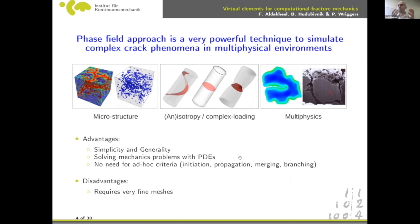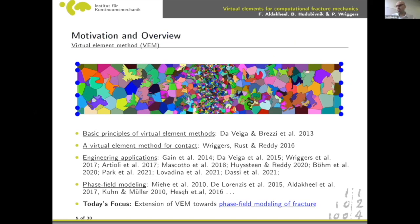Like any method, it also has disadvantages. One major disadvantage is the requirement for very fine mesh. At the microscopic scale, for example a concrete specimen, we need around three million elements to resolve a sharp crack — and even that is not fine enough. This is a key disadvantage of the standard phase field approach, which we tackle using the virtual element method with refined mesh.